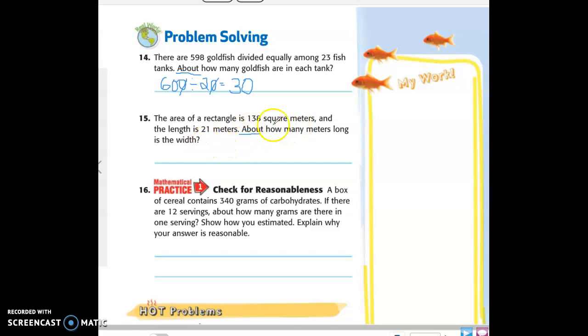We need to round our numbers and we know what operation are we going to use for this to find out? Division. So let's go ahead and estimate. Let's round 138 square meters. What? 140. 140, perfect. So we're going to put 140 divided by what number when we round 21? What number does that give us? 20.